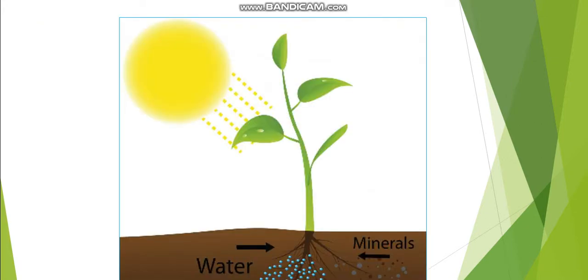Look at this picture. The green plants absorb water and mineral salts from their roots. The plant draws up water through its roots. The leaves take carbon dioxide from the air.